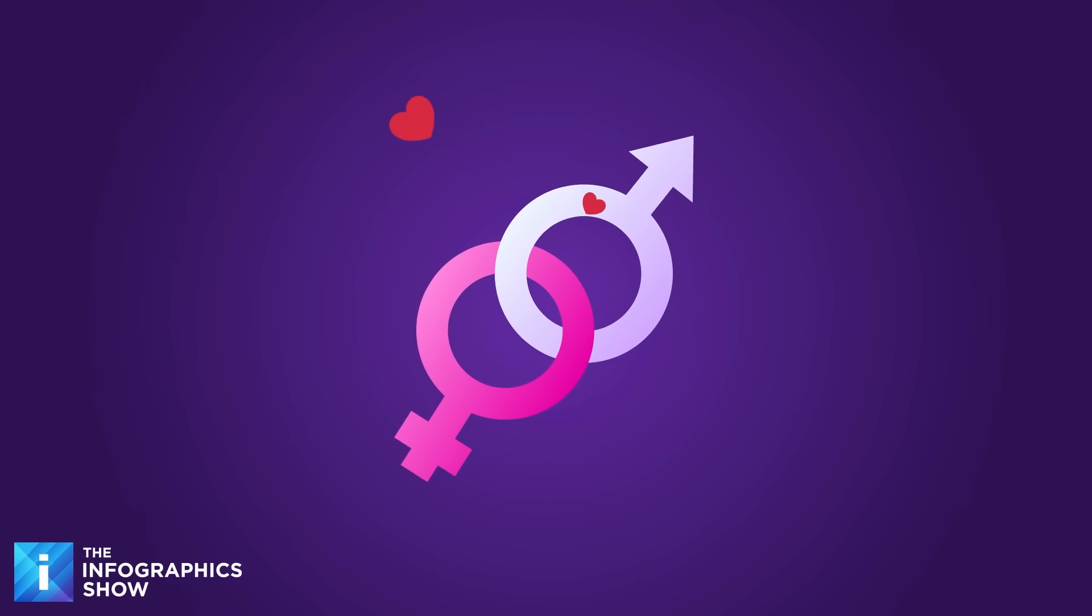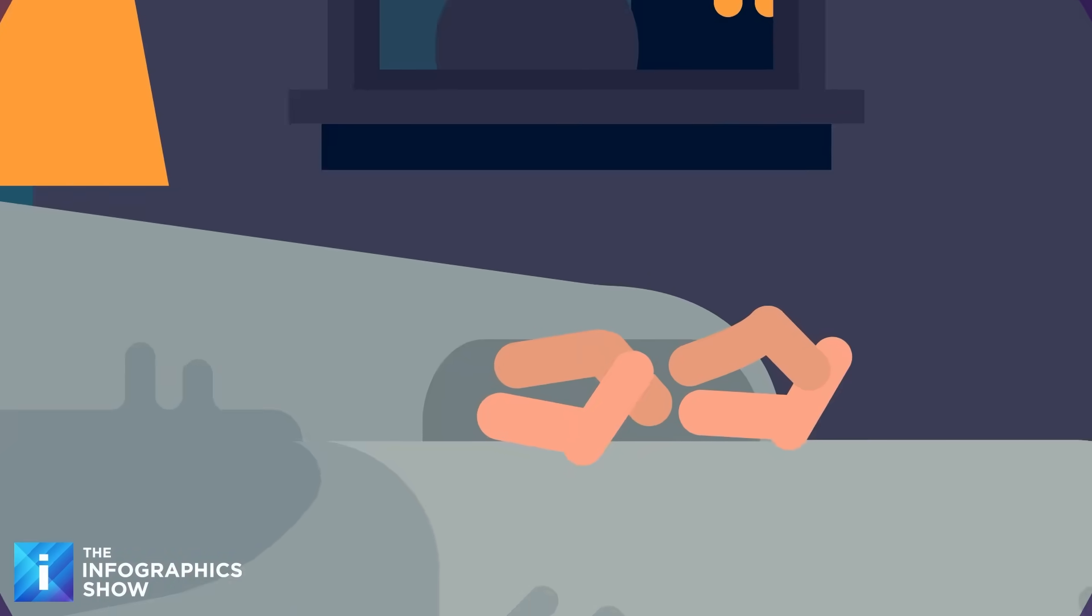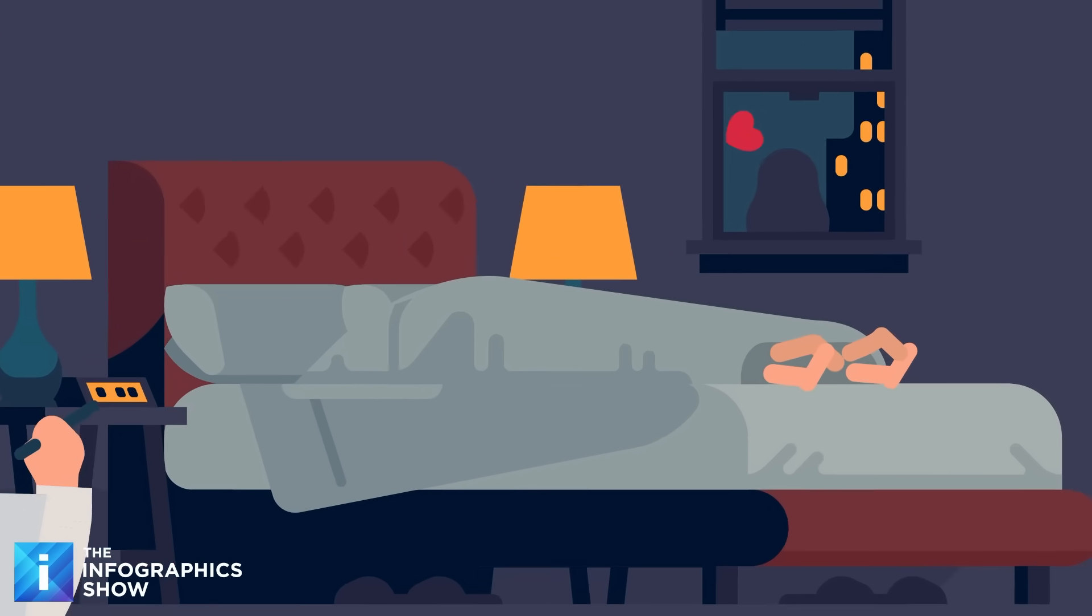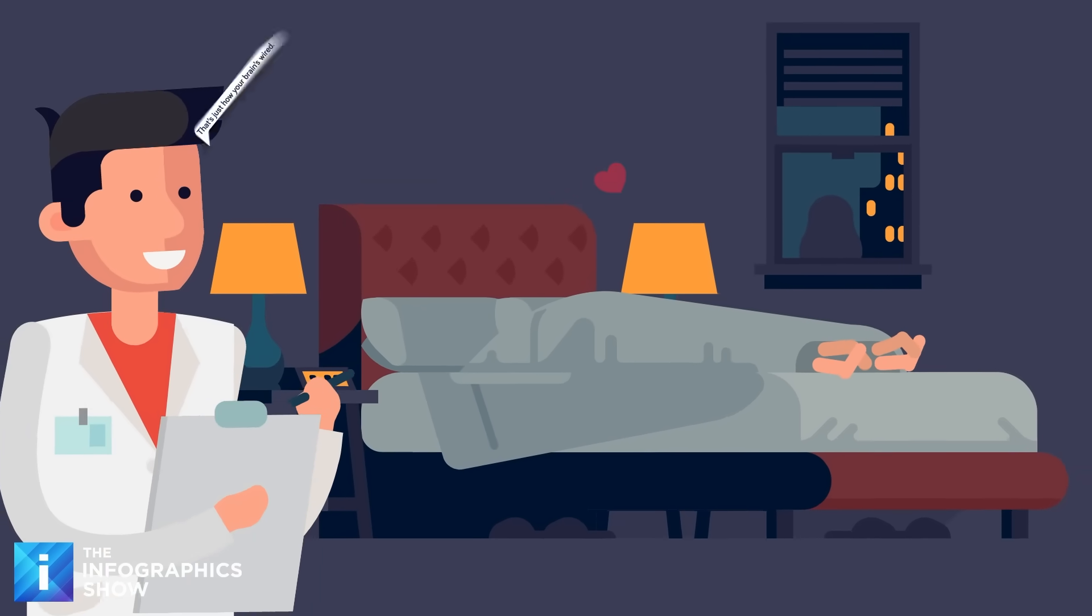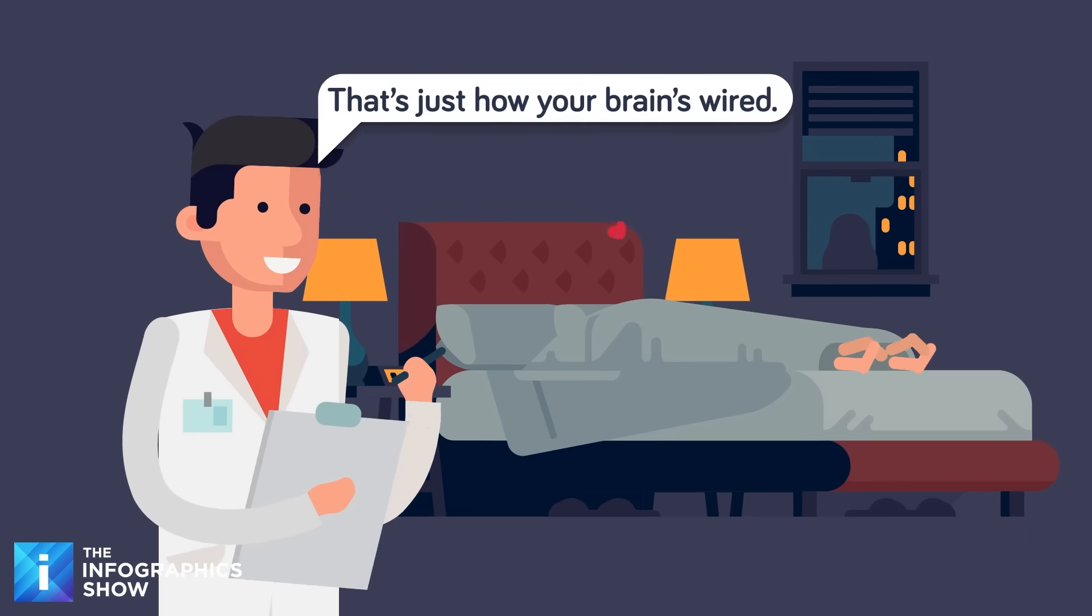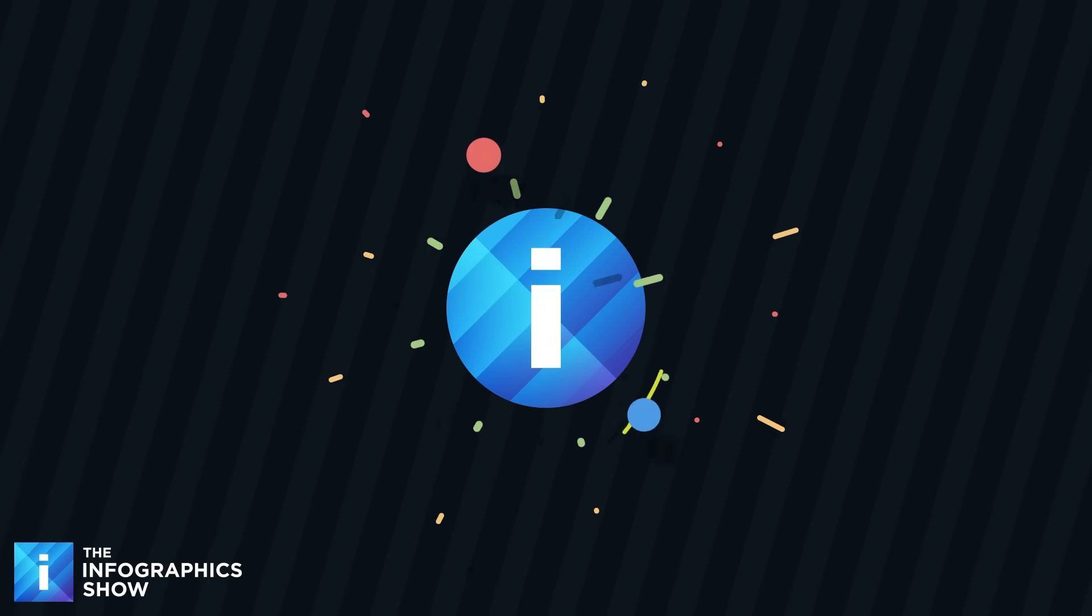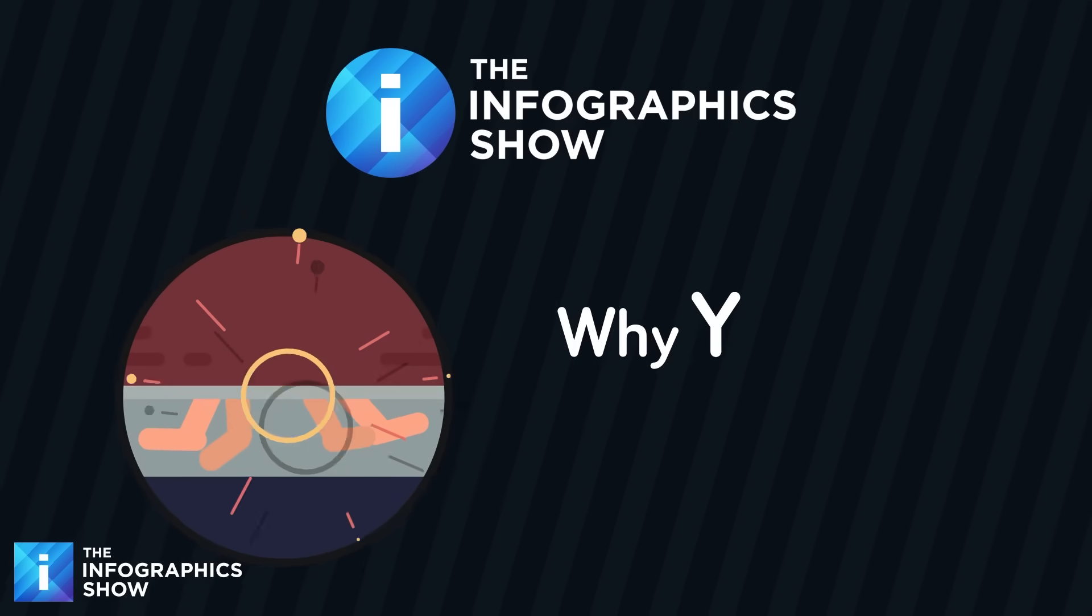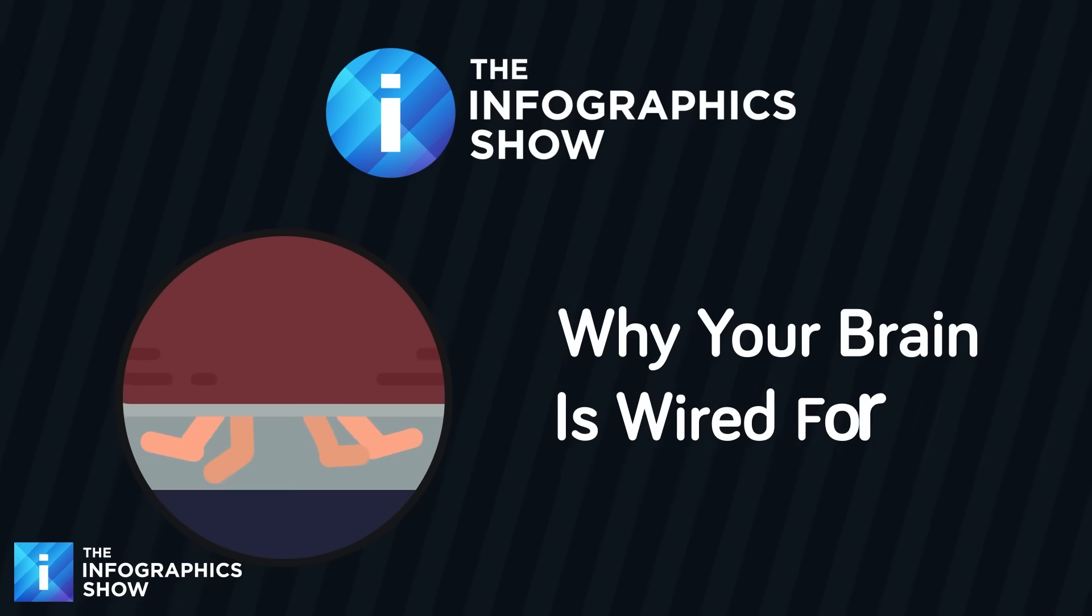Sex. Everyone talks about it. Most people want it. But why? It turns out we've all got sex on the brain. Science says it's not just about attraction or biology. In fact, sex might be more mental than physical. We're pulling back the sheets to uncover what really drives desire on today's episode of The Infographics Show, Why Your Brain Is Wired For Sex.